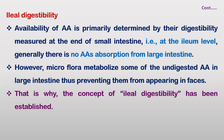Next is Ileal Digestibility. The ileum is the last part of the small intestine. The availability of an amino acid is primarily determined by its digestibility, and that digestibility is measured at the end of the small intestine — at the ileum level. That is why this is called Ileal Digestibility of a particular amino acid.